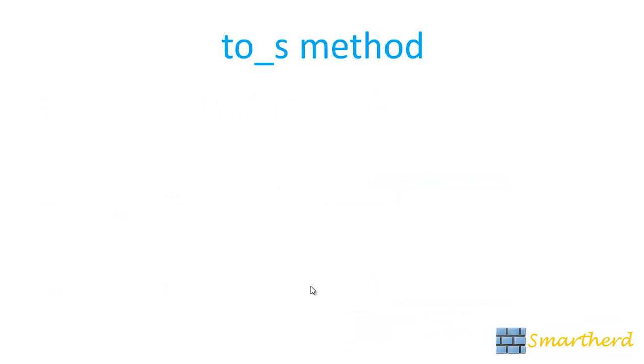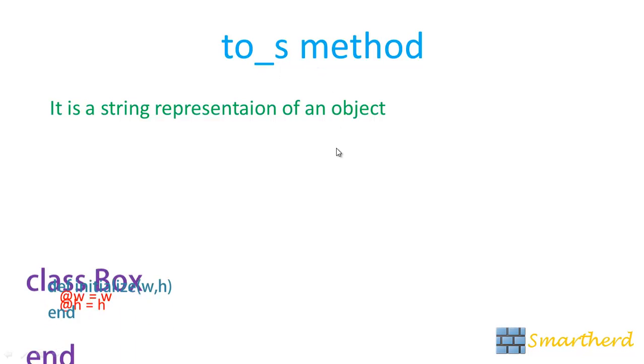Now let's move forward to our to underscore s method. Now what is this to underscore s method. It is a string representation of an object. If you want to represent an object in terms of string then you have to use to underscore s method in your class in your class body.